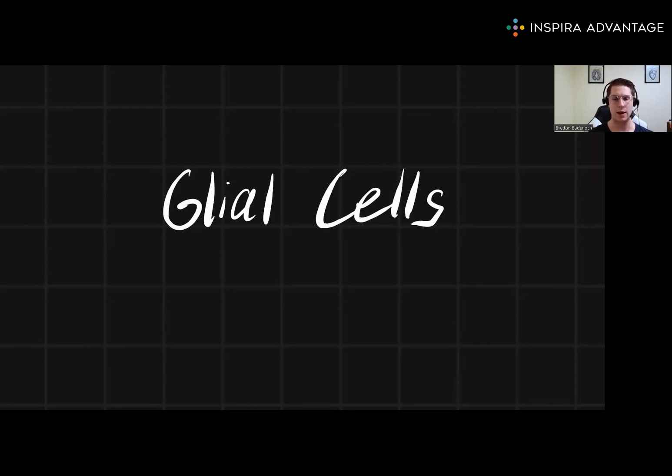Let's start today by taking a look at astrocytes. These cells help form the blood-brain barrier, which is important for preventing solutes in the blood from getting into the brain. Let's take a look at what the blood-brain barrier looks like.